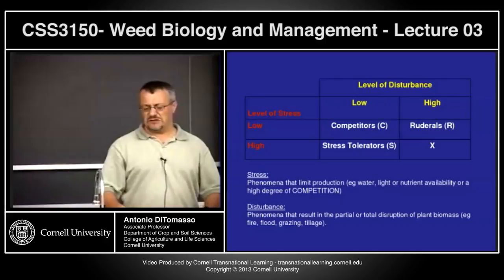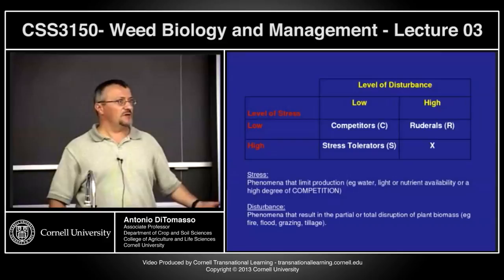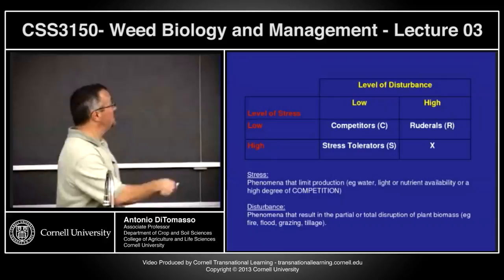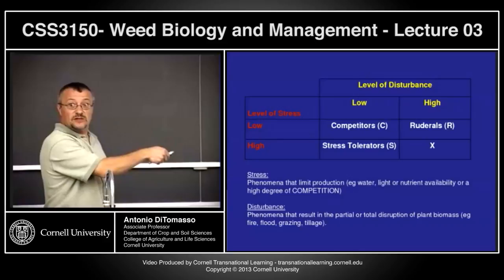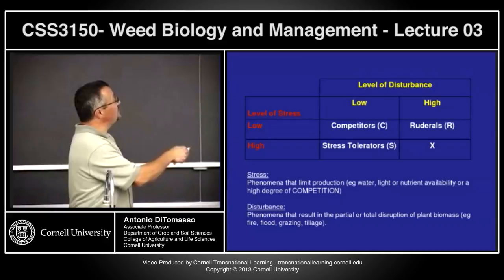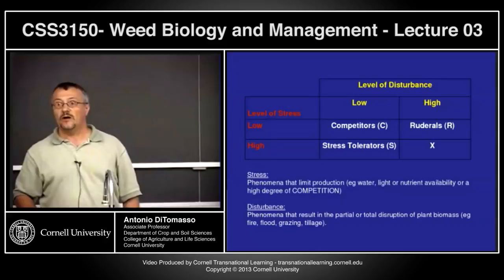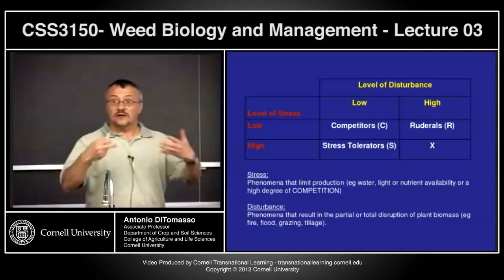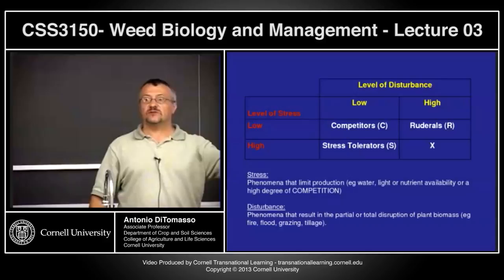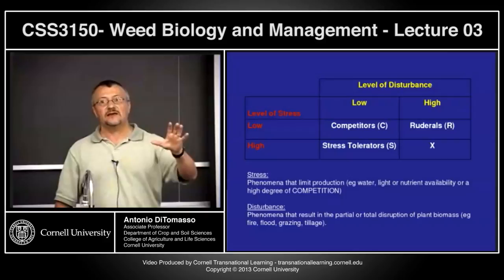Most of our agricultural systems are closest to ruderals and competitors. In an alfalfa field there for two to three years with good fertility and low disturbance, competitors dominate. In annual cropping systems with frequent tillage, ruderals dominate. Very few of our annual weeds in agricultural systems tend to be stress tolerators. Why? Because in typical agricultural systems, we're fertilizing, irrigating — we're basically pampering our crops. Weeds have been selected to love those same conditions, and that's why a lot of them mimic the crop.